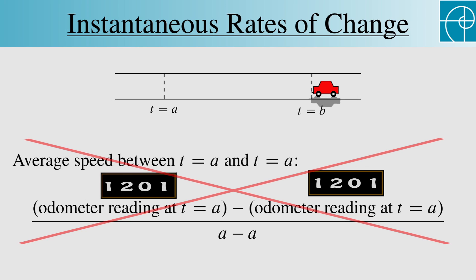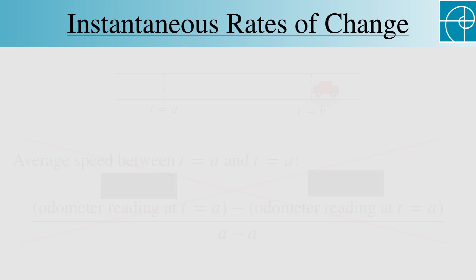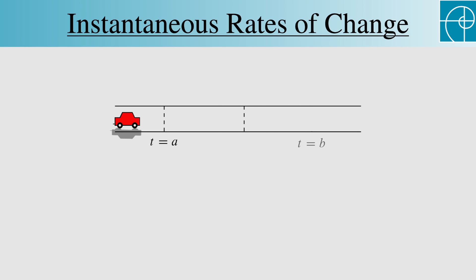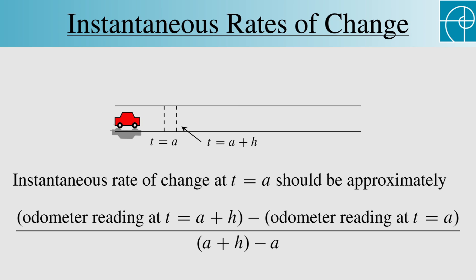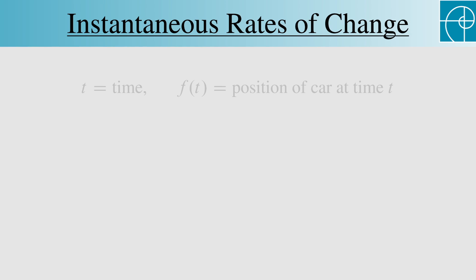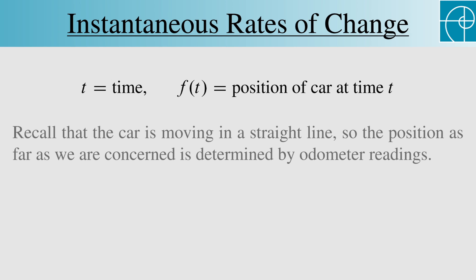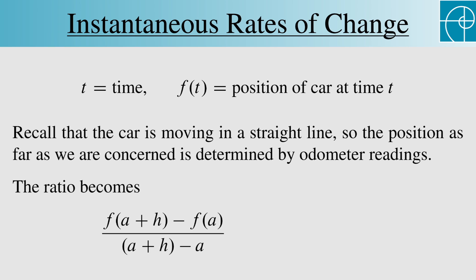As we saw already, we can't plug a into both places in the ratio, but we can take some really small number h and replace b with a plus h. We get a reasonable approximation of the instantaneous rate of change with the resulting ratio. Let's say that f is the position of the car at time t, and remember that we're assuming that the car is moving in a straight line, so the position can be determined by odometer readings. The ratio becomes this, and we can simplify the denominator to h. We can't set h equal to 0, but we can take the limit as h approaches 0, and that's how we define the instantaneous rate of change.